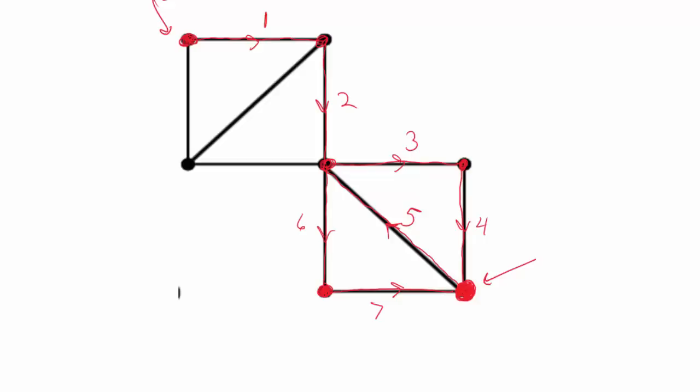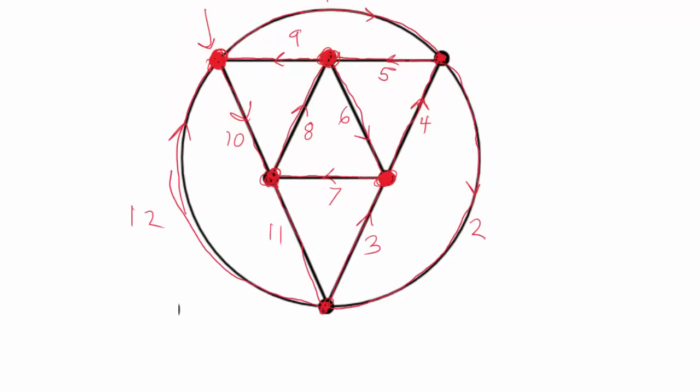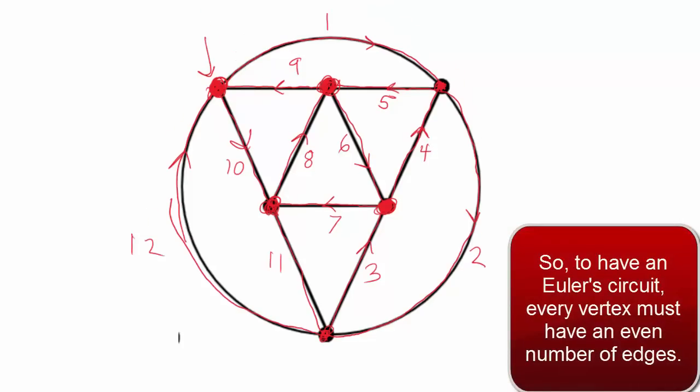So the key idea, what was true in this graph that was not true in the second example, is that for every way of entering, there's an exit. The number of times you enter a vertex is the same as the number of times you exit the vertex. And now we're going to develop that idea into what is called Euler's criterion, which is a result that tells us precisely when a graph has an Euler circuit.